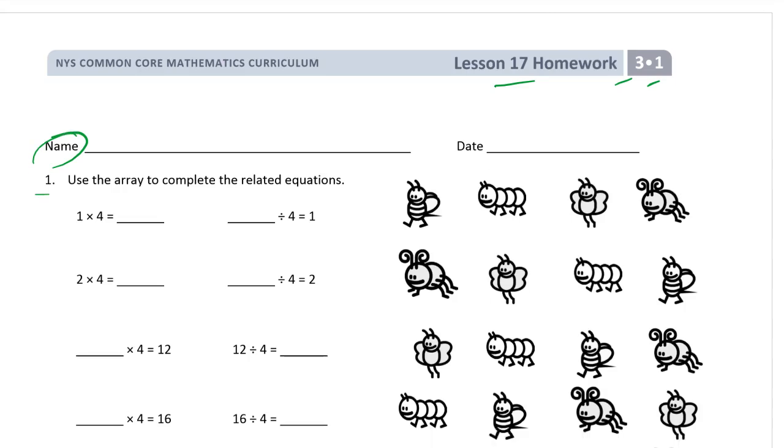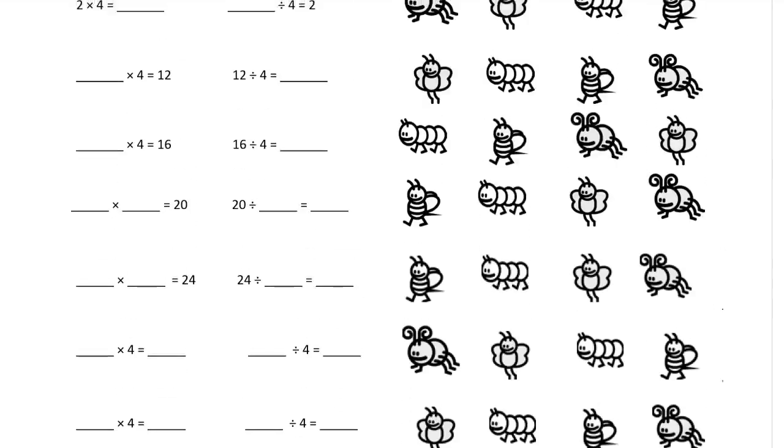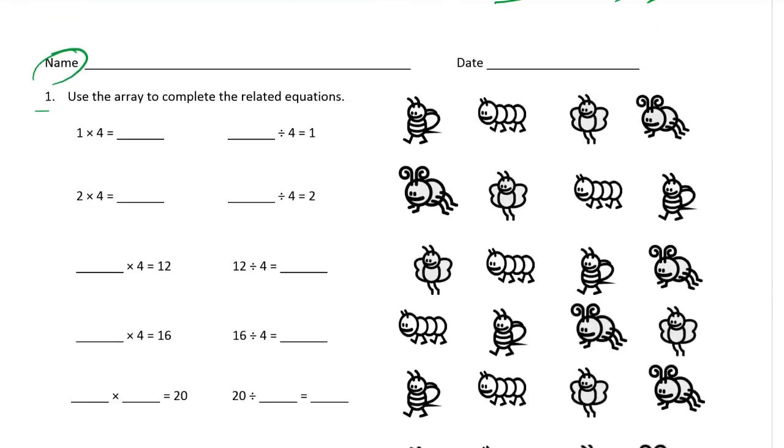On this page we have lots of four facts and more and more fours. We're doing fours over and over again until we know them all. This is one row of bugs. One row of four is four bugs. And then four total bugs divided by four in each row is one row. Two times four is eight. And so eight divided by four is two.